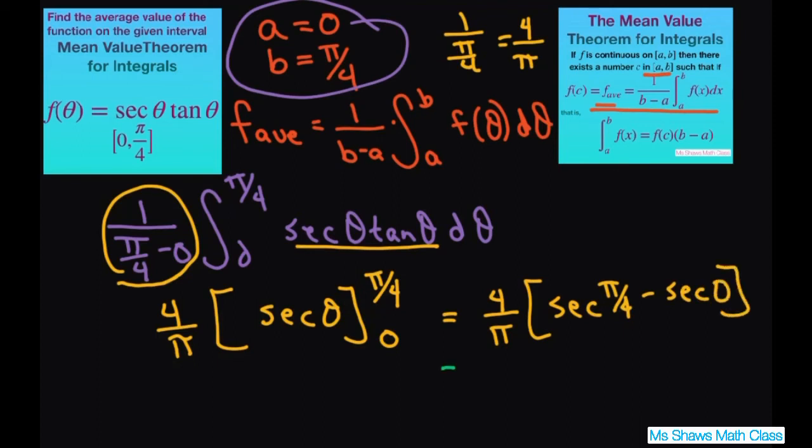This equals 4 divided by pi. And secant of pi divided by 4 is going to be square root of 2. And secant of 0 is 1.